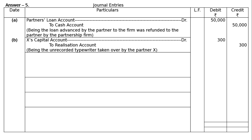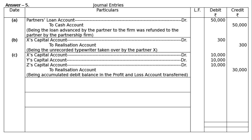Part C: Undistributed balance or debit balance of the profit and loss account of rupees 30,000. The firm had three partners: X, Y, and Z. X's capital account debited rupees 10,000, Y's capital account debited rupees 10,000, Z's capital account debited rupees 10,000 — to realization account rupees 30,000, being the accumulated debit balance in the profit and loss account transferred.